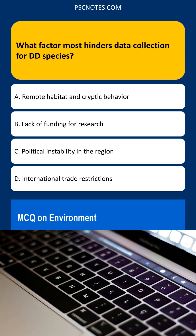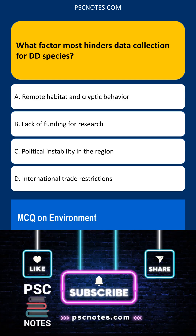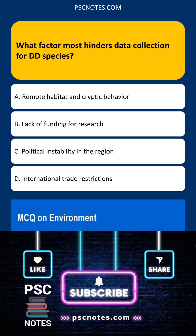Why other options are less suitable: while limiting, resources for research are an indirect factor. Political turmoil might affect some but not all DD species. Trade barriers would affect already identified, studied, and traded species — not the data collection process for DD species.